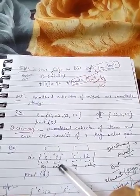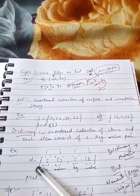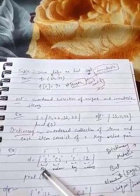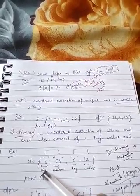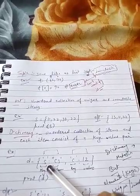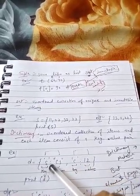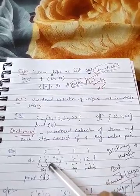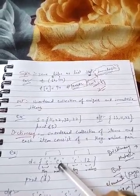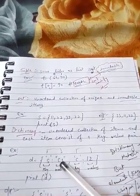Key-value pair means suppose we are writing here d, d is any variable for creating any dictionary. Here we are using curly brackets to define the dictionary here. Here is s, we are taking as a key, and cs is the string value we are passing here.